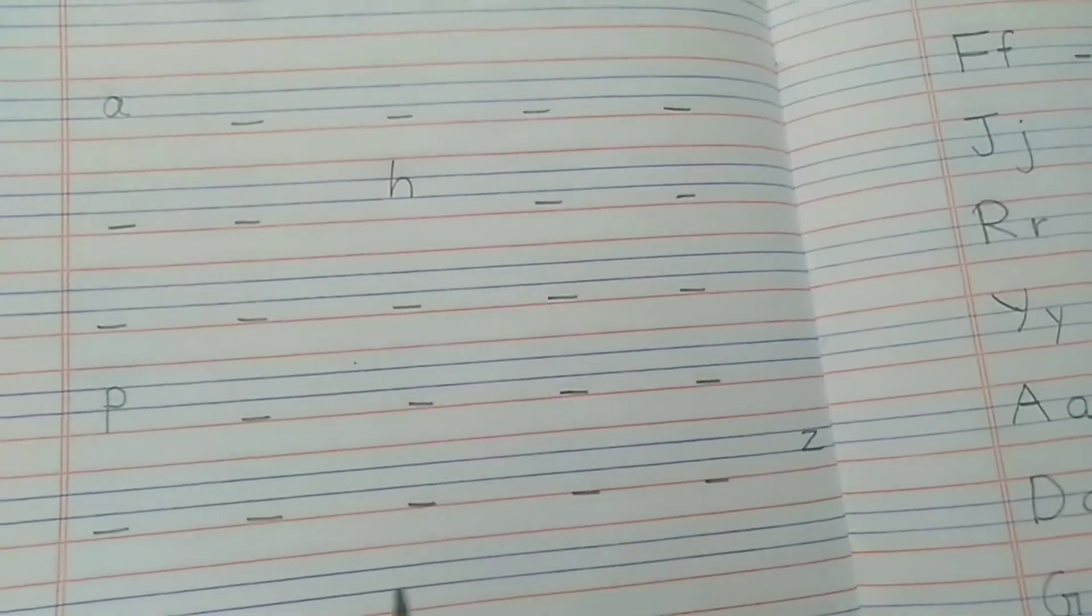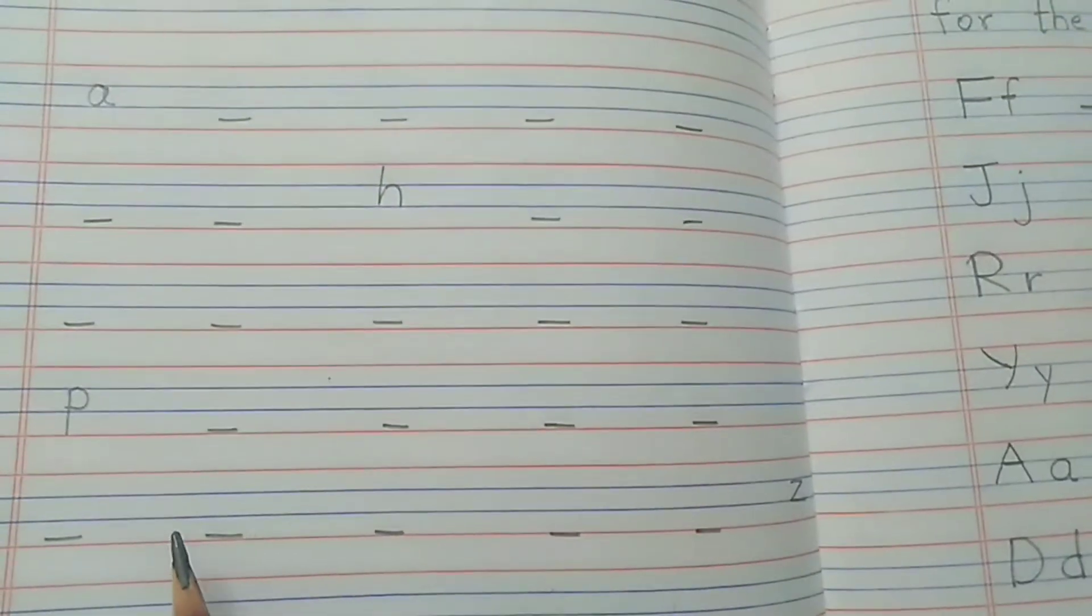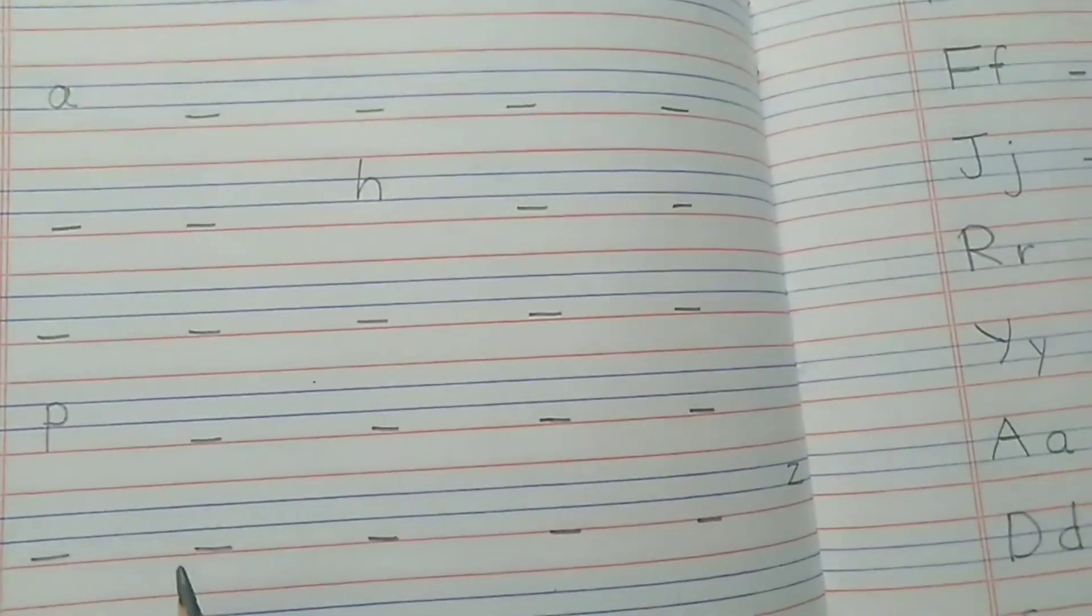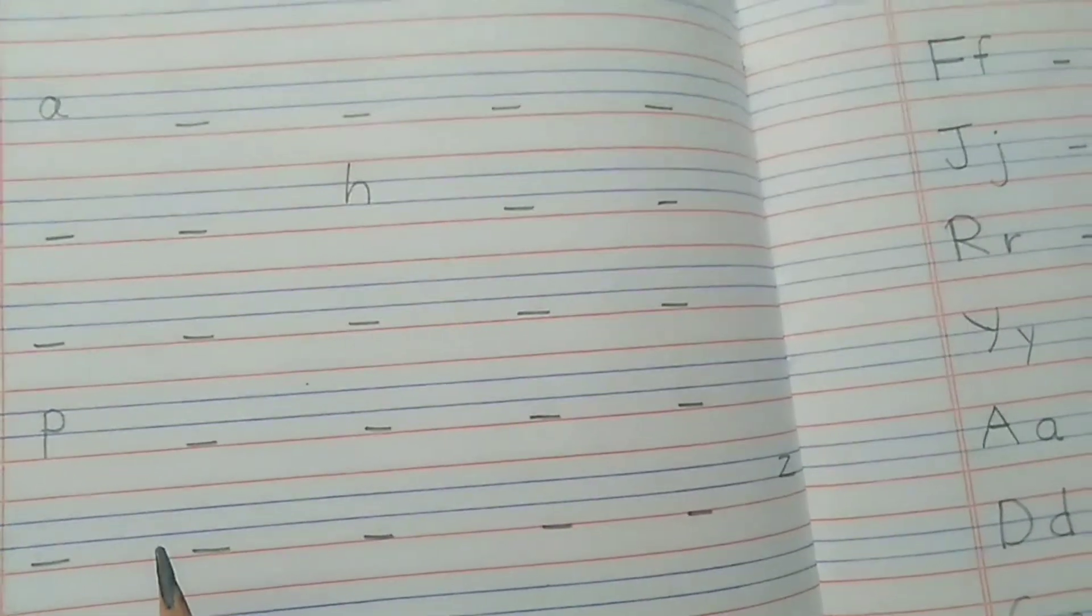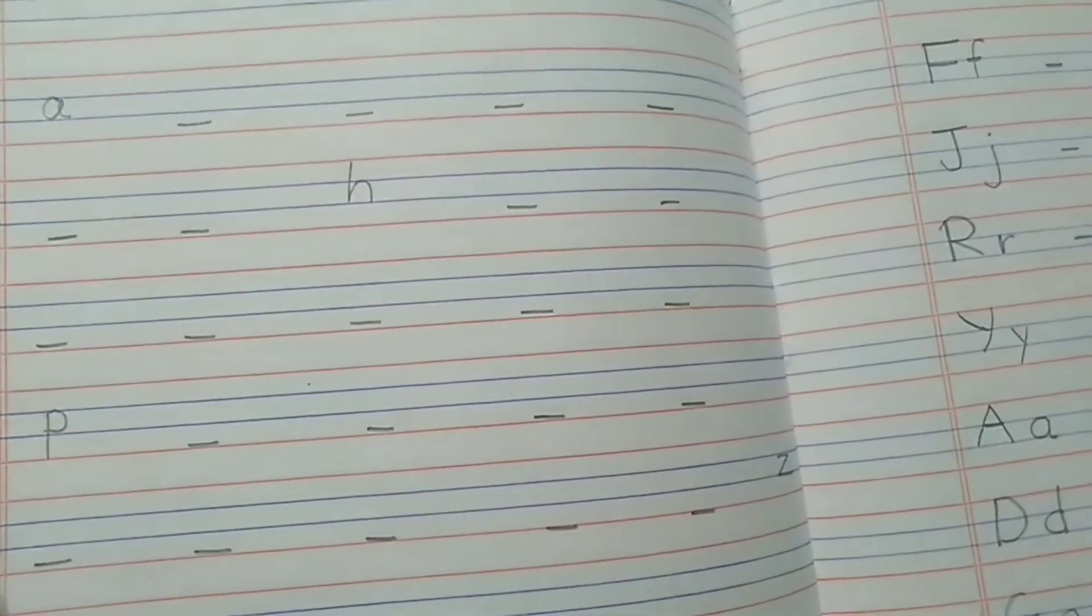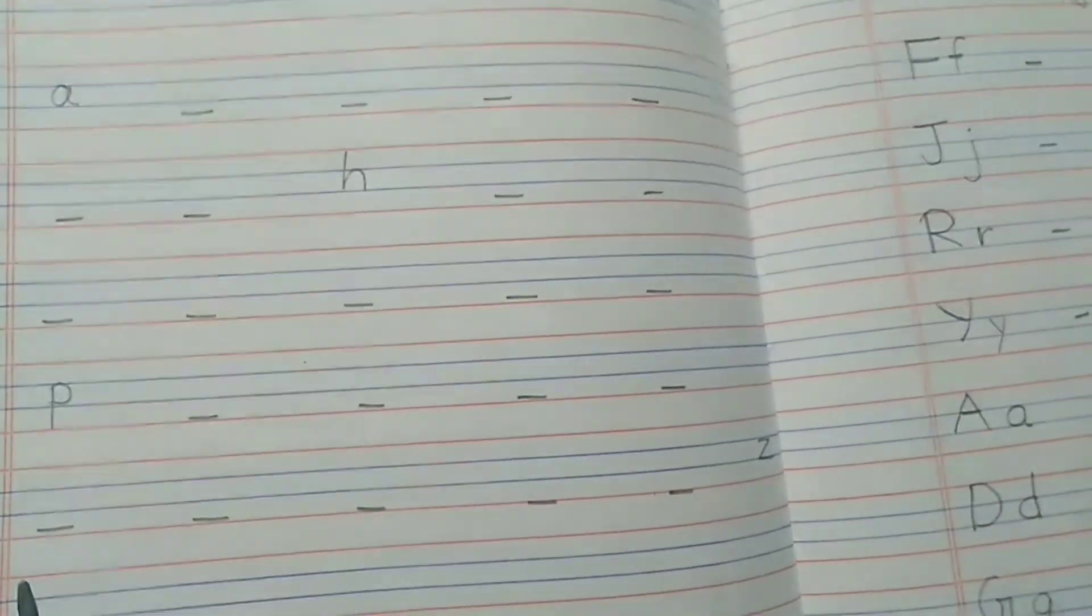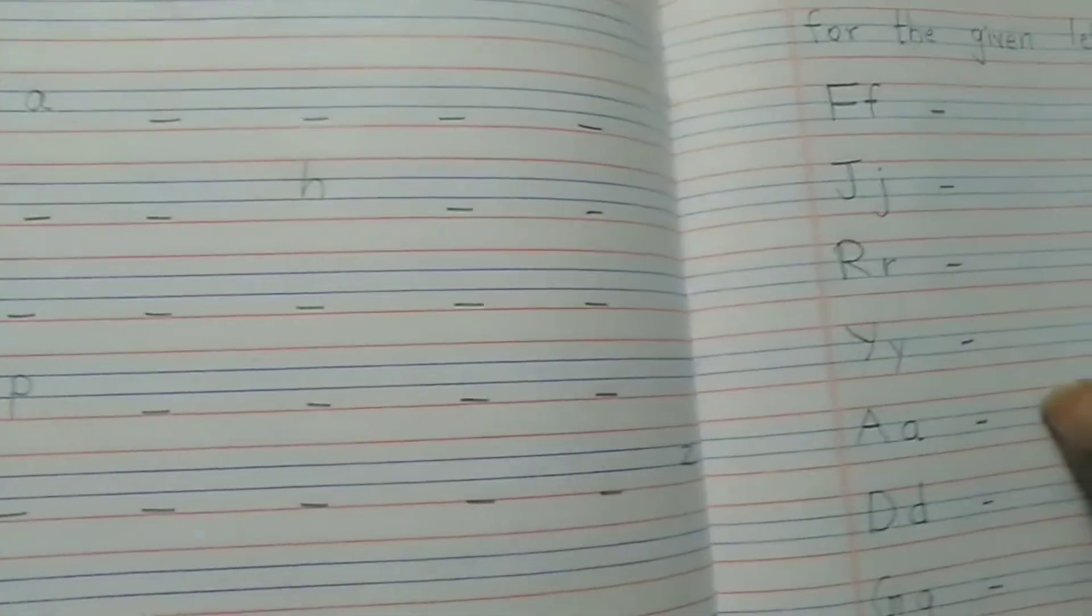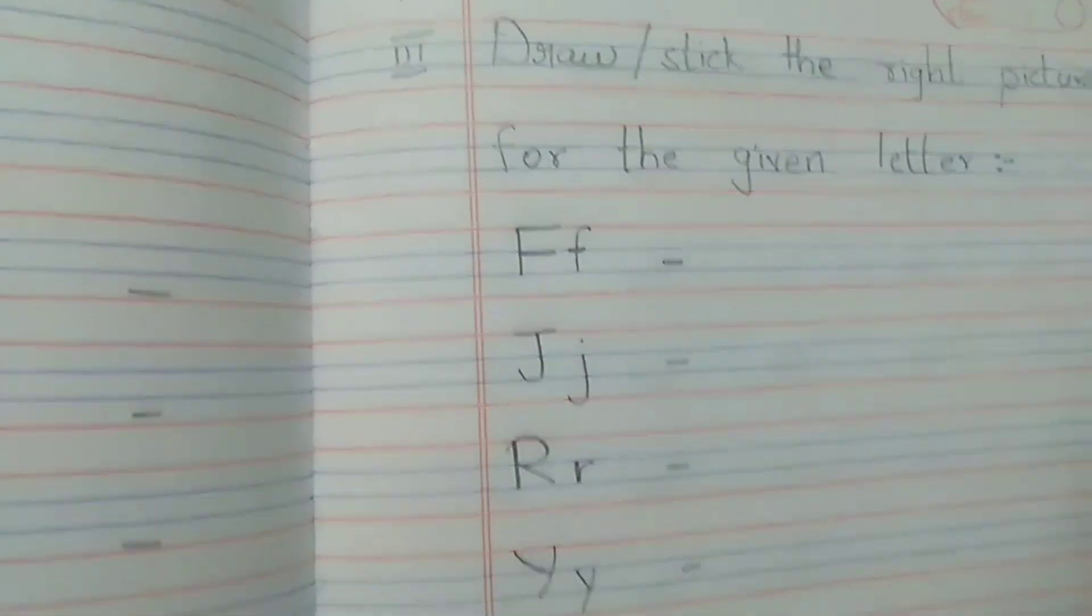When you're writing, parents please make a video. If it's a lengthy video, make short videos - different mains, different videos. You can send capital alphabets and small alphabets as different videos. These activities, children, I think you will do it very fast.